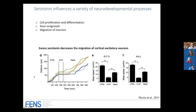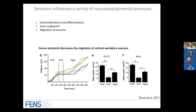Serotonin is a very important neurotransmitter in the adult brain and is a target of many drugs used in psychiatry — antidepressant, anxiolytic, and antipsychotic drugs. But in early brain development, serotonin has a very different role. We know that in early brain development serotonin influences a variety of neurodevelopmental processes, including cell proliferation and differentiation, axon outgrowth, and neuronal migration.